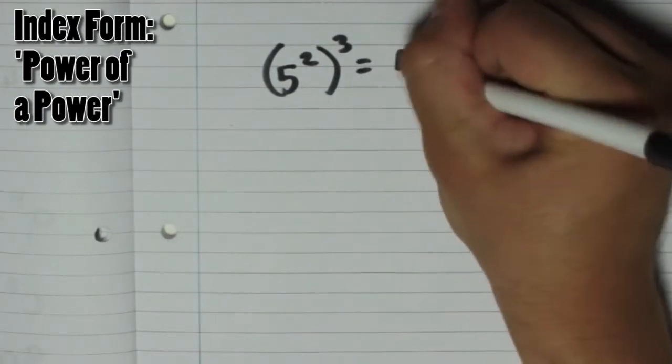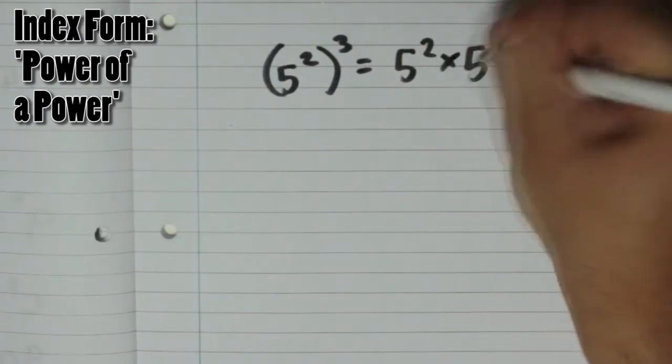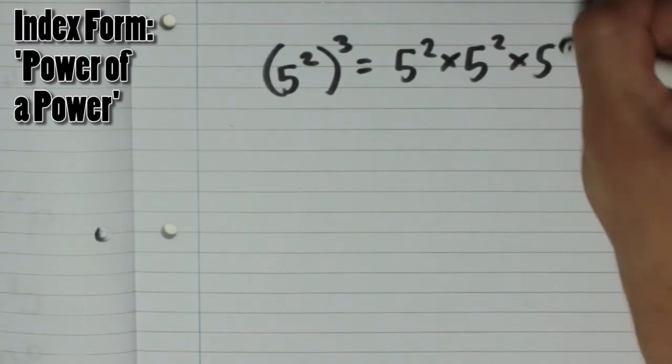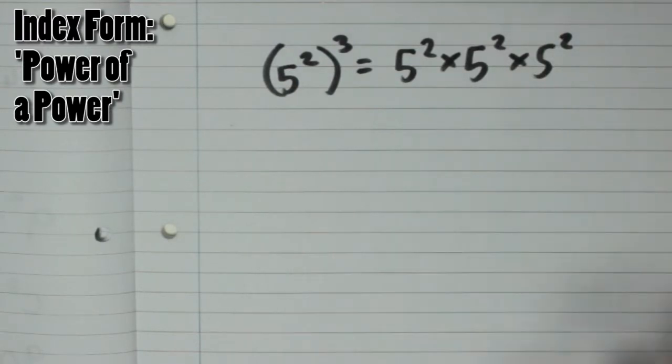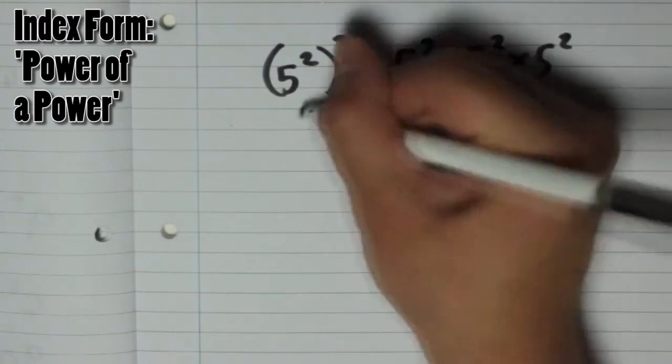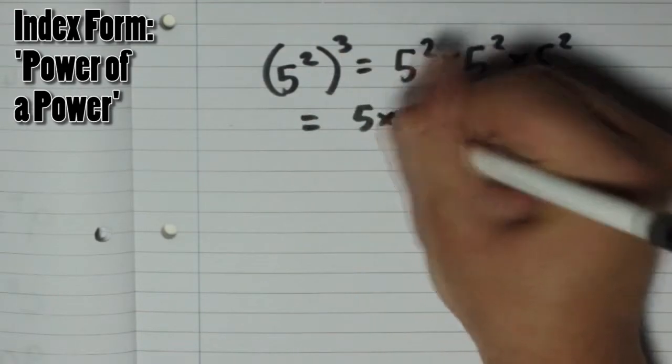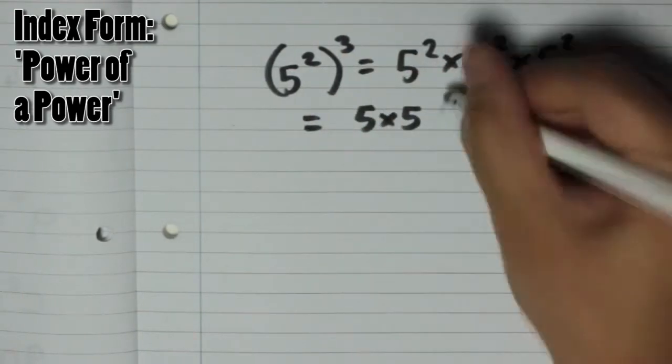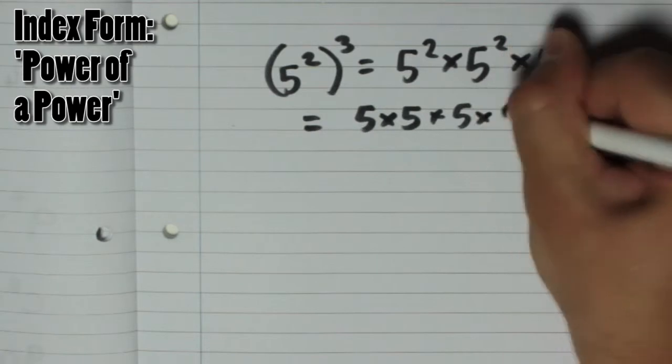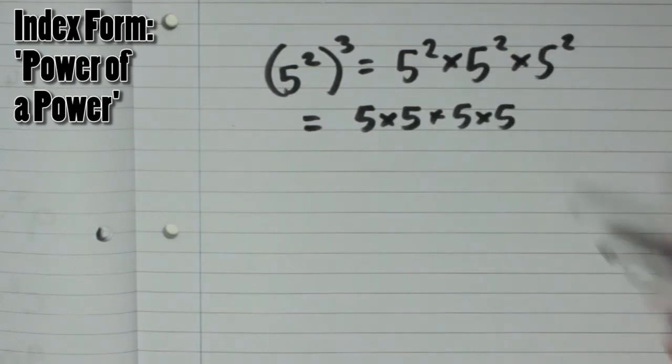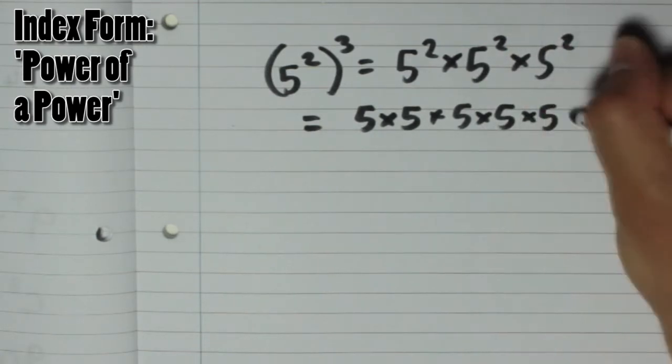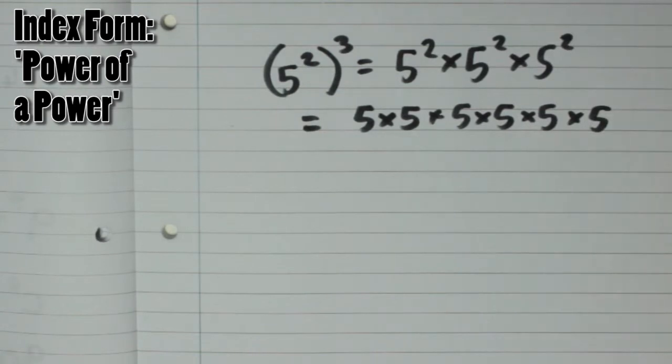So that is 5 squared times 5 squared times 5 squared. If you were to write that out in full, you would end up with 5 times 5, that's a 5 squared, times 5 times 5, that's another 5 squared, and then finally times 5 times 5, that's the final 5 squared.